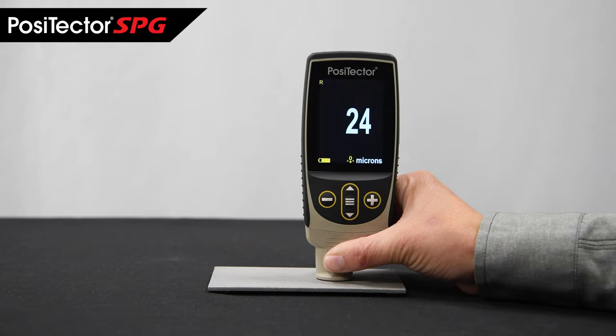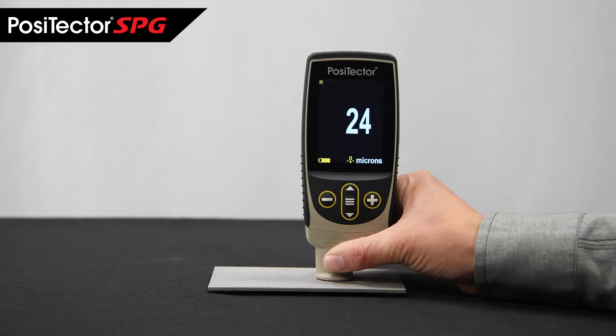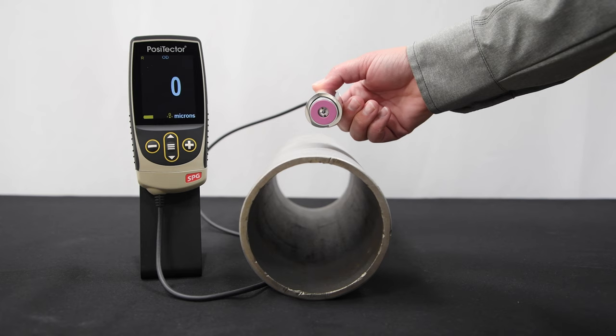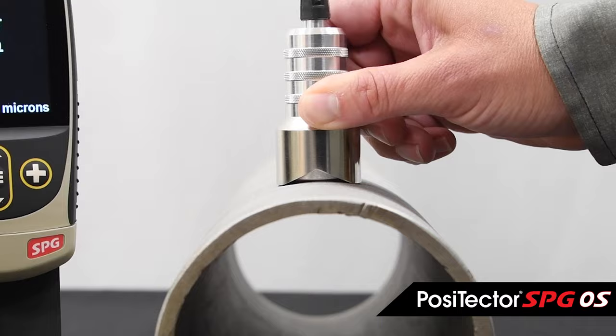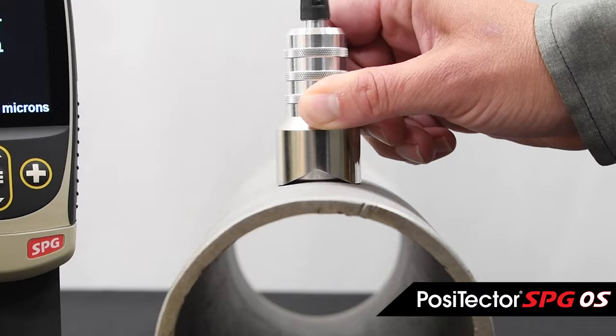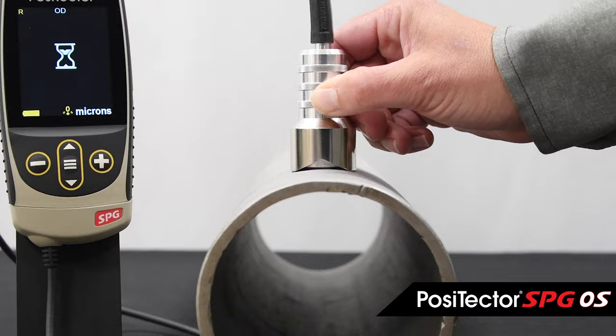The PosiTector SPG is available as an integral model for one-handed operation or a cabled model for improved ergonomics in hard-to-reach areas. The PosiTector SPG OS model features a V-groove and proprietary OD mode for measuring convex surfaces with outside diameters greater than three millimeters or an eighth of an inch, such as on pipes and tanks.